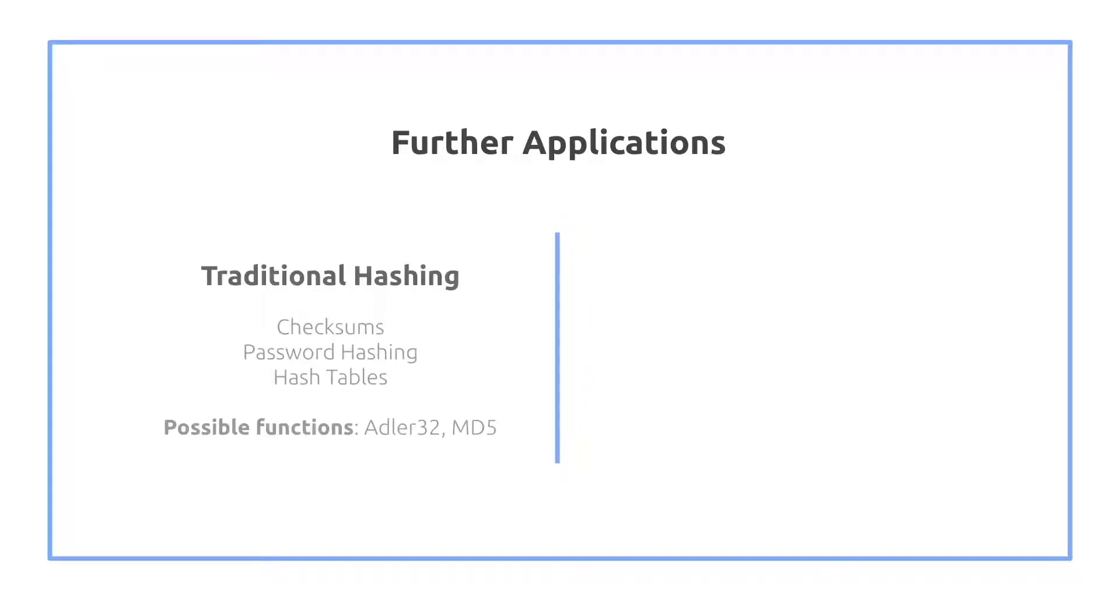Some further applications. Traditional hashing, you may see it in checksums, password hashing. It's critical in password hashing that the values are more sparse. Because if I'm close to guessing someone's password, I don't want to see that the hash code is very close or potentially colliding with it. We want to get completely different hashed passwords.